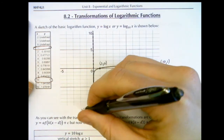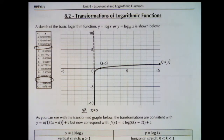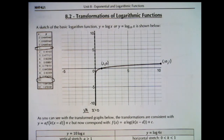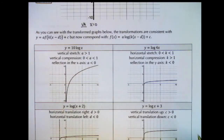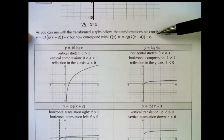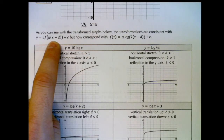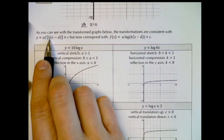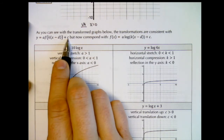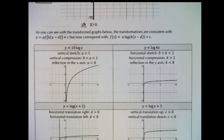So three key features for graphing the common logarithm: the two key points and the vertical asymptote. This lesson is about transformations of log functions. The transformations are consistent with what we've been doing for the last two years: we have 'a' multiplying the function, inside the function we have 'k' times x minus d, and outside the function we have plus c. Laying these on top of the log function shows you where each transformation lives.